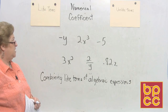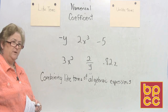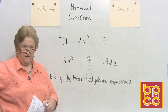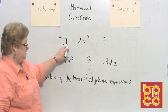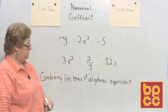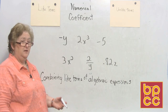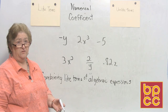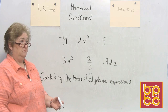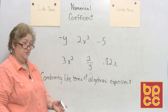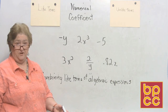In this lesson we're going to talk about terms and find out the difference between like terms and unlike terms. I have put several terms up here just to show you what terms look like. They can be just a variable, a variable with a certain exponent, a number with lots of variables and exponents, or just a number with no exponent and no variable.